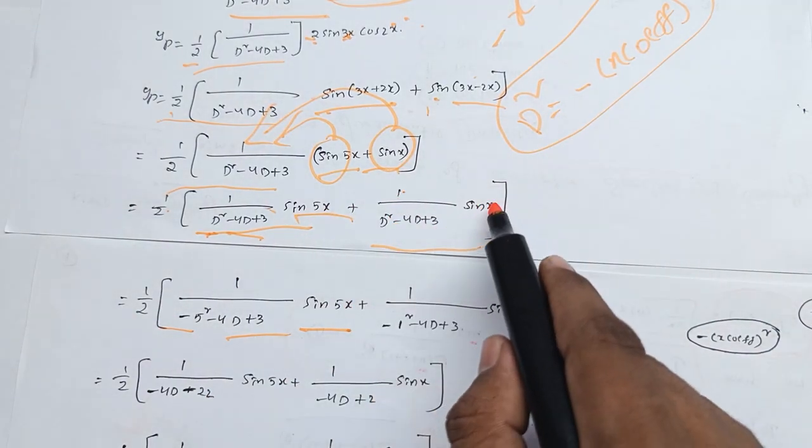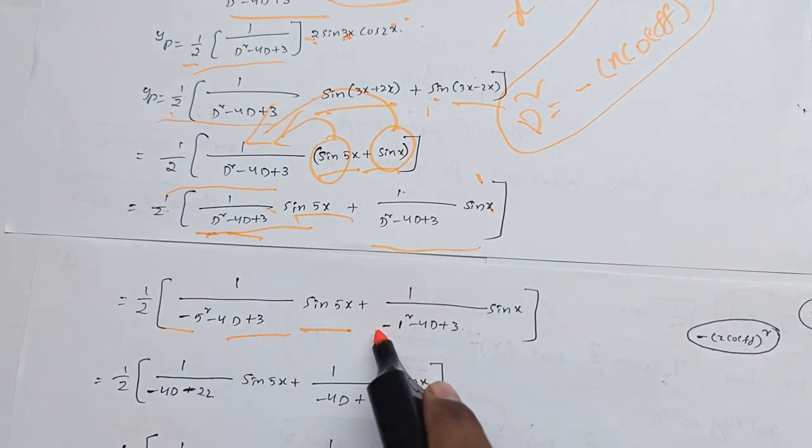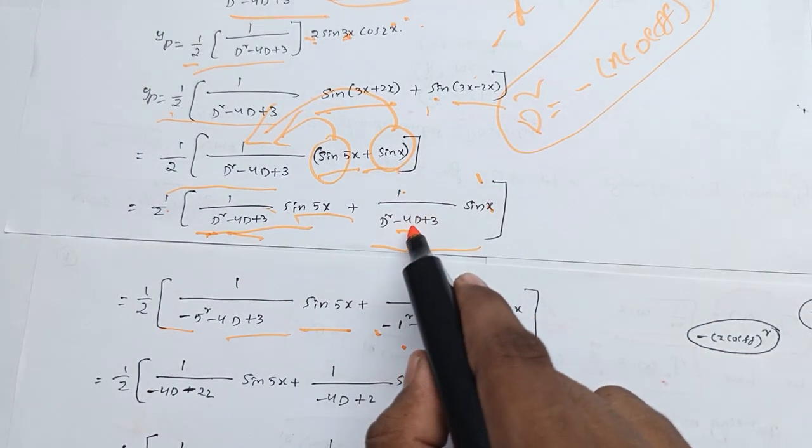And for the sin x term, the x coefficient is 1, so minus 1 squared is minus 1.